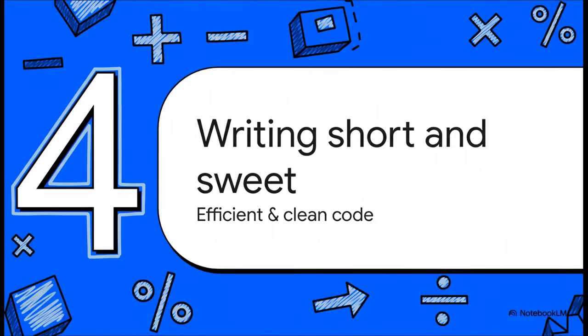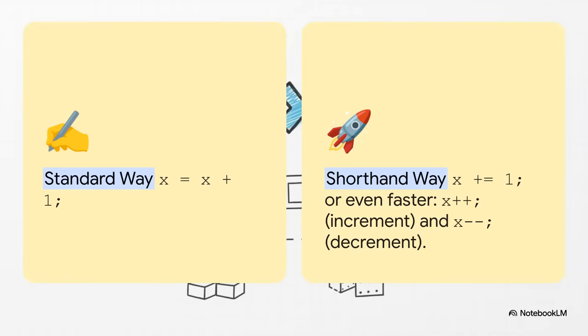Okay, so you've got the basics of calculating down. Now let's talk about a pro move—how to write code that's more efficient and clean. You know, good programmers are lazy, in a smart way. They don't want to type more than they need to. These shortcuts are a big part of that. So you're going to find yourself doing this all the time, taking a variable and adding something to it. The standard way is on the left, x equals x plus 1. It works, but it's a bit long. The shorthand way is much cleaner—x plus equals 1 does the exact same thing. And if you're just adding or subtracting 1, which is super common, you can use x plus plus, that's called increment, or x minus minus for decrement. You will see these two everywhere.